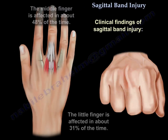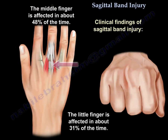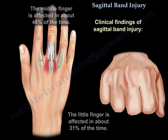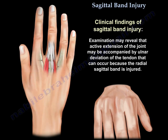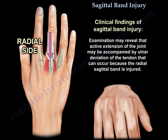The middle finger is affected in about 48% of cases and the little finger is affected in about 31% of cases. Examination may reveal that active extension of the joint may be accompanied by ulnar deviation of the tendon, which can occur because the radial sagittal band is injured.